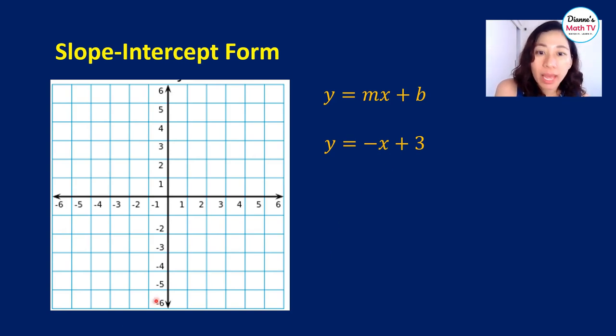Now from here, the slope is the number multiplied to x. What is that number multiplied to x here if you have negative x? Negative x is simply negative 1 times x, correct? So that means our m is equal to negative 1 and your b is equal to 3. What is the meaning of b equal to 3? That means that your y-intercept is the point 0, 3. That is the point where it intersects your y-axis. So this is your y-axis.